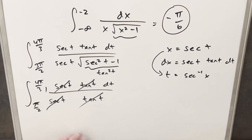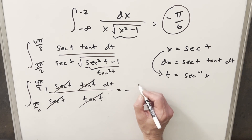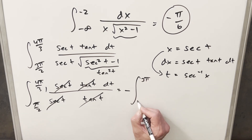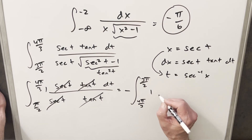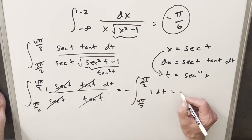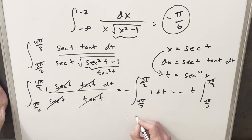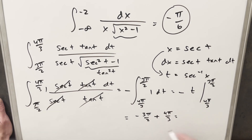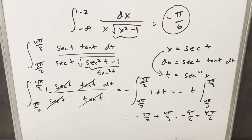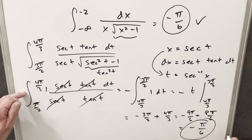Since three pi over two is greater than four pi over three, I'll flip the bounds and introduce a minus sign, integrating one dt from four pi over three to three pi over two. Integrating gives minus t evaluated from four pi over three to three pi over two. Plugging in: minus three pi over two plus four pi over three. With a common denominator this is minus nine pi over six plus eight pi over six, giving a solution of minus pi over six. Same answer — we just had to be careful about quadrants and the sign of the bounds.